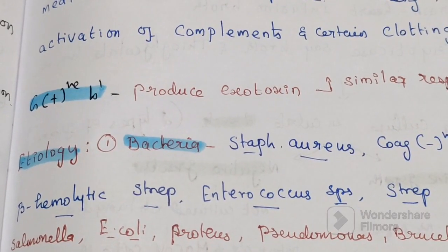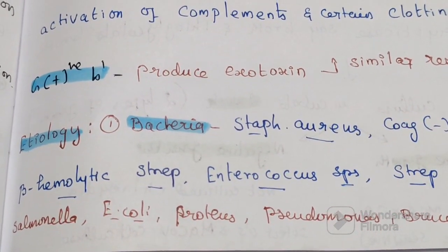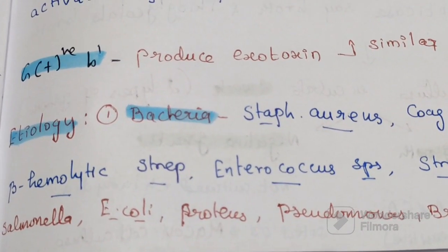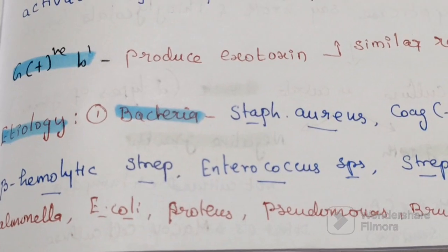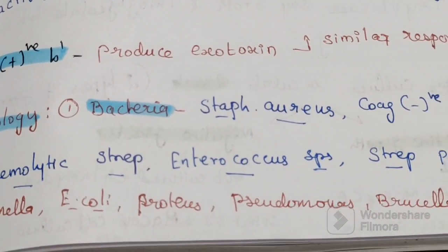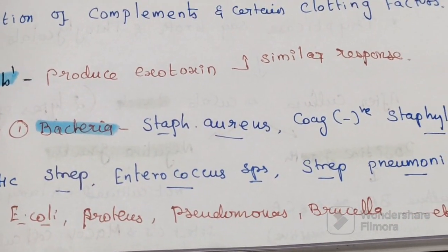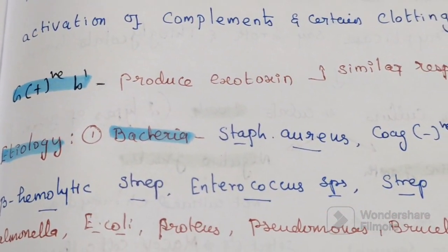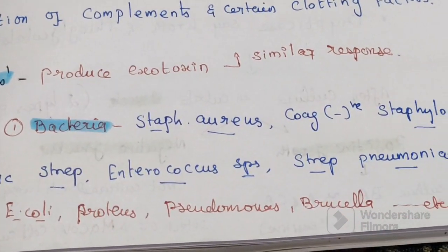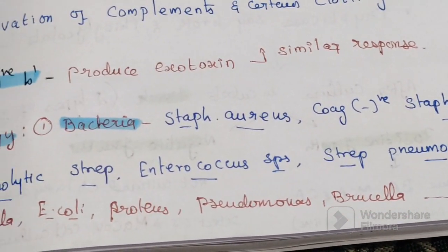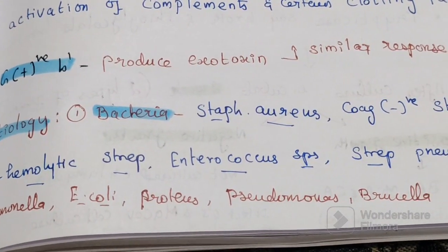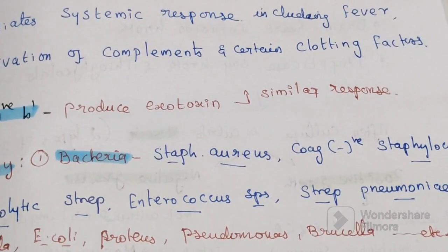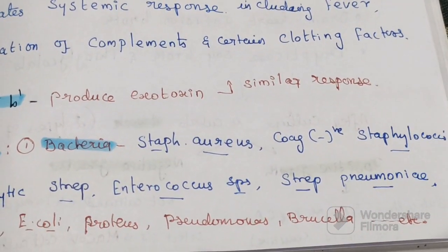The causative agents of bloodstream infection include various bacteria, fungi, viruses, and protozoa. The bacteria responsible include Staphylococcus, coagulase-negative Staphylococcus, beta-hemolytic Streptococcus, Enterococcus, Streptococcus pneumoniae, Salmonella species, E. coli, Proteus, Pseudomonas, and Brucella.